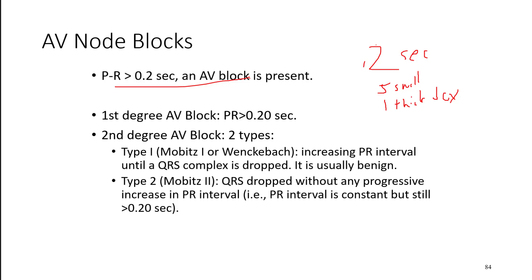A Type 2 second-degree AV block is where the QRS drops out but there is no progressive increase in the duration of the PR interval. The PR interval is still above 0.2 seconds — so it's delayed — and there is a dropout of the QRS, but it doesn't get longer and longer. It stays long, above 0.2, but never increases further, and then we see a QRS drop out.